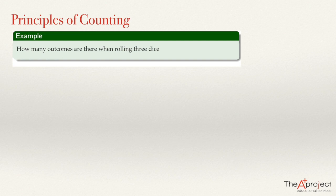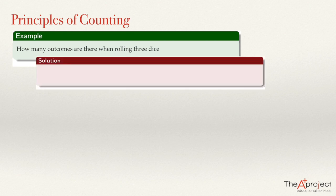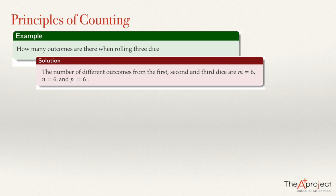How many outcomes are there when rolling three dice? We know that when rolling a die, we have six possible outcomes — six ways that the die can land. So the number of different outcomes from the first, second, and third die will each be six, and the total number of outcomes will be six times six times six.